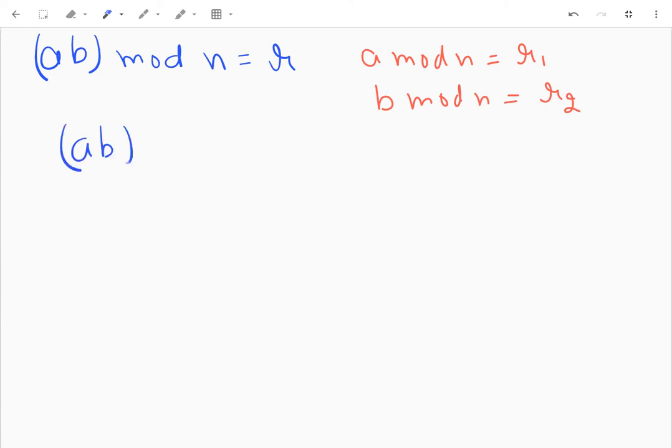Okay, so for this proof let me assume ab mod n equal to r, and let me say a mod n is r1 and b mod n is r2. So we have proved that ab mod n is same as a mod n into b mod n.